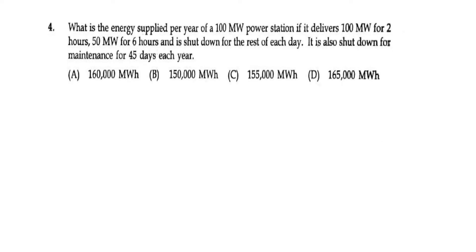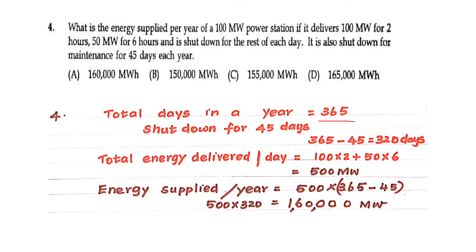What is the energy supplied per year of a 100 MW power station if it delivers 100 MW for 2 hours, 50 MW for 6 hours, and is shut down for the rest of the day? It is also shut down for maintenance for 45 days in a year. Total days in a year: 365 minus 45 shutdown days equals 320 working days. Total energy delivered per day: 100×2 + 50×6 = 500 MWh. Energy supplied per year: 500 × 320 = 1,60,000 MWh.